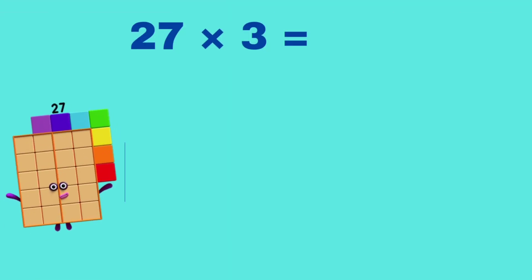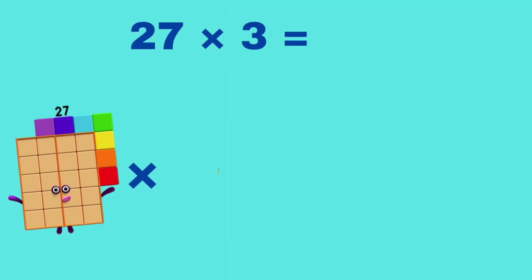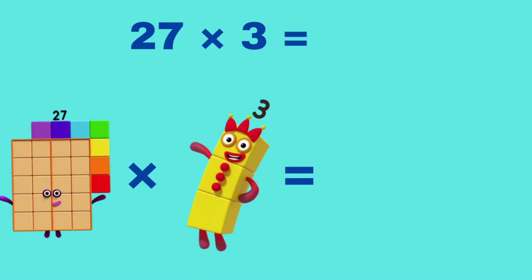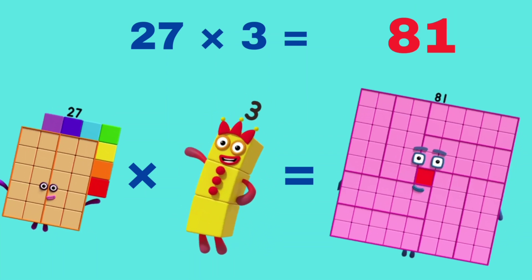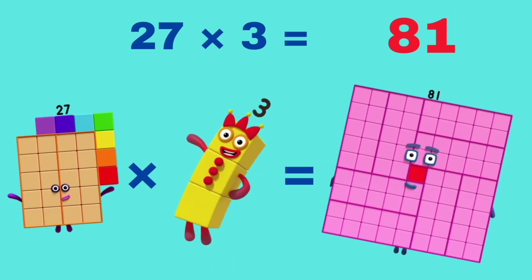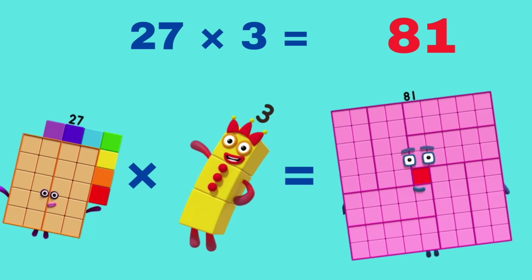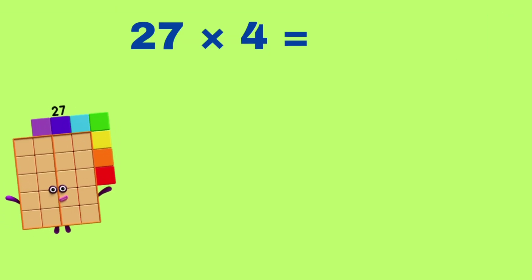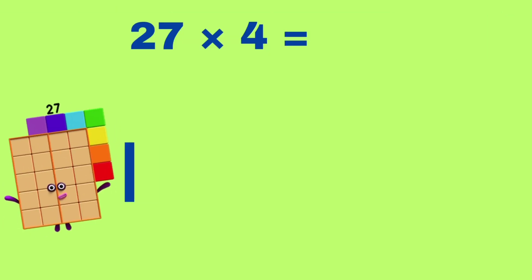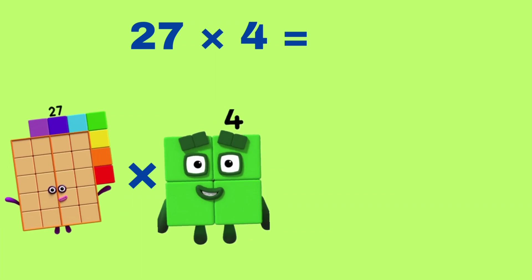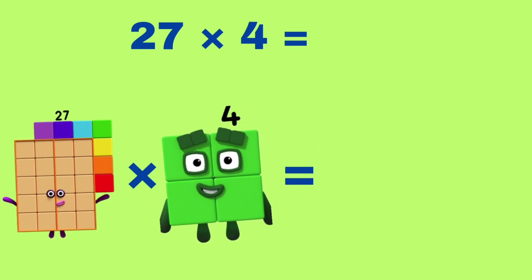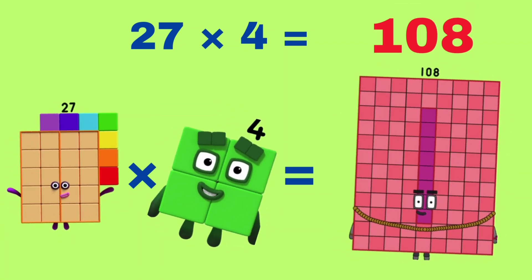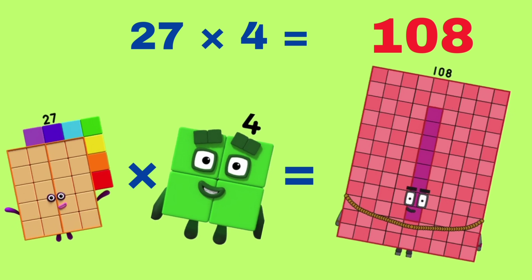27 multiplied by 3 is equals to 81. 81. 27 multiplied by 4 is equals to 108. 108.